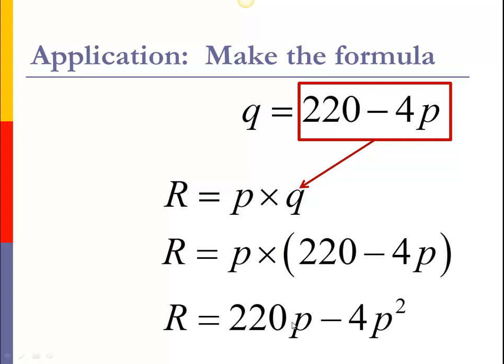And then we just multiply this through, bring that P all the way through. And so 220P minus 4P squared is our formula for the revenue based upon this demand function that we've been given.